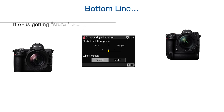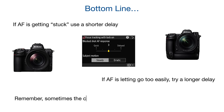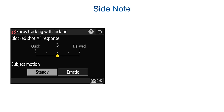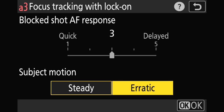So what's the bottom line? If the AF system seems to be getting stuck and not readily jumping from one AF lock to the next, try a shorter delay. If it seems like it's falling off the target too easily, go for a longer delay. For bird-in-flight work, most of the time I'm pretty happy in the three to four range. We also have a setting for subject motion — erratic or steady. Usually I have this on steady, but if you're shooting quick landing and takeoff scenarios, try erratic.